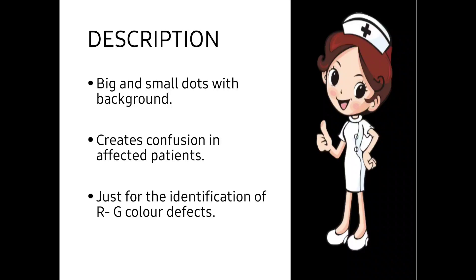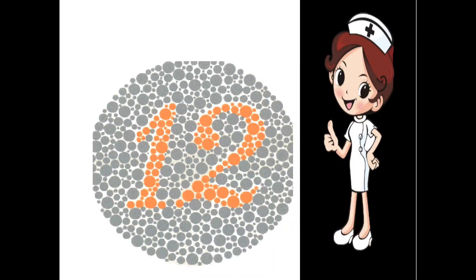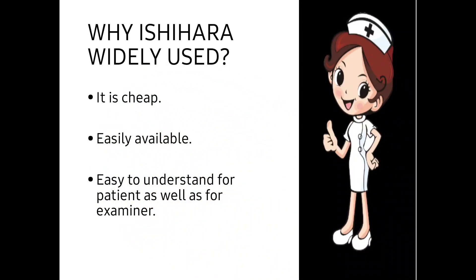The Ishihara test is just for the identification of red and green color defect. However, the defect also exists for blue color, so this is the disadvantage of the Ishihara test — it cannot find out the blue color defect. For finding the defect of blue color, we have to do another test. This test can only identify red and green color defects.